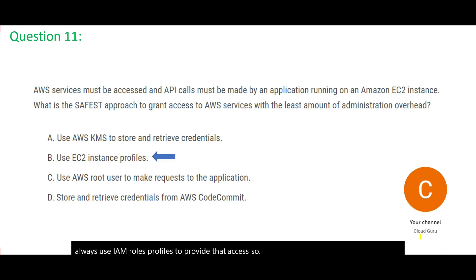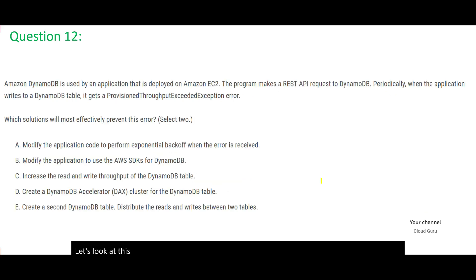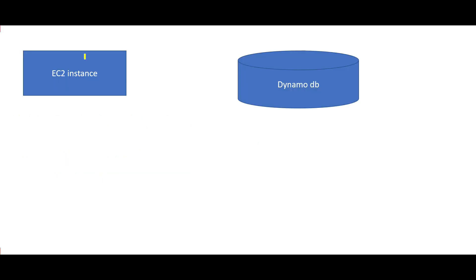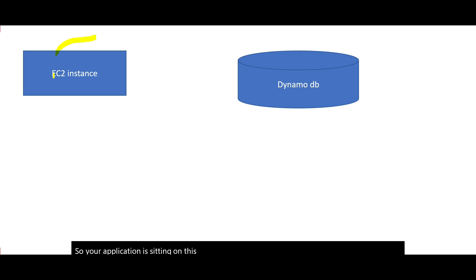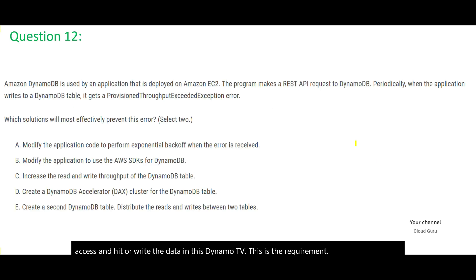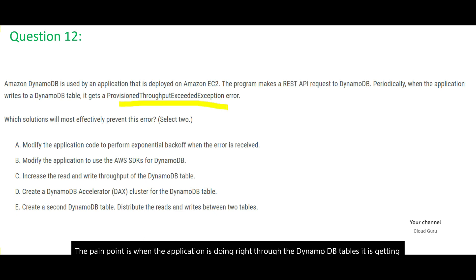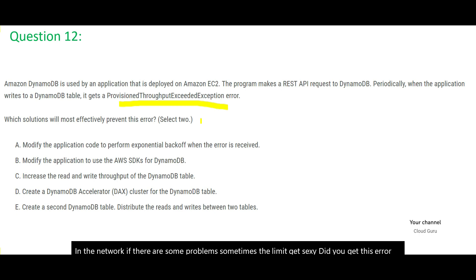We will lock that answer and move forward. Now let's look at this DynamoDB question. A DynamoDB table is used by an application deployed on an EC2 instance. The application is writing data to DynamoDB, but when it does the writes, it is making a ProvisionedThroughputExceededException error. We already know why this error occurs — in the network, if there are some problems, the limit gets exceeded and you get this error. The question is asking how to solve or prevent this error.